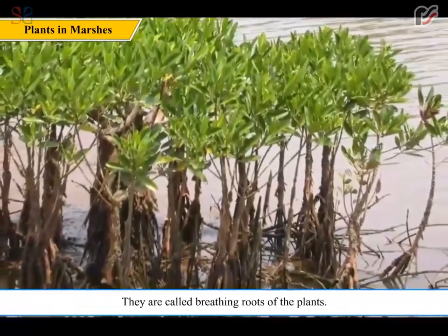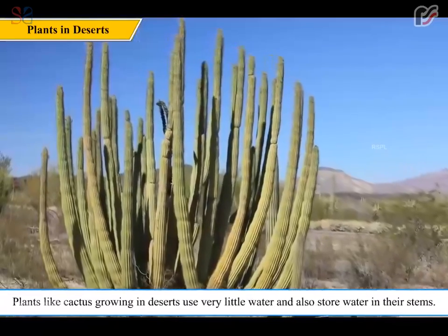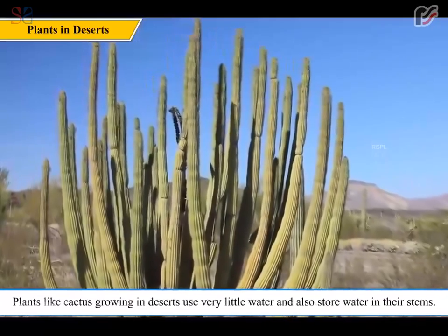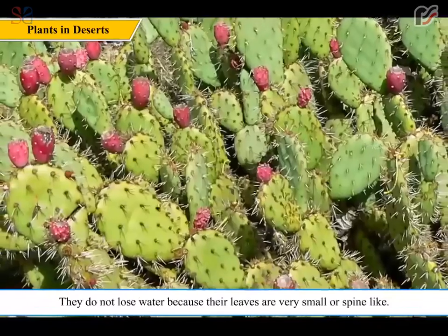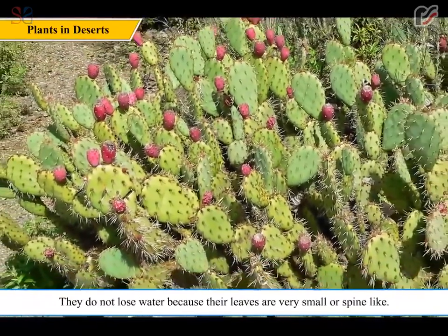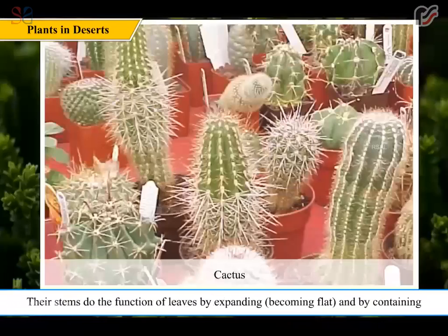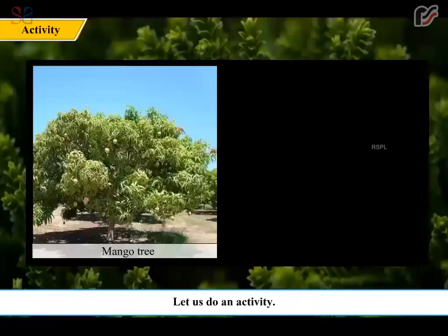The roots that come out of the soil are called breathing roots of the plants. Plants like cactus growing in deserts use very little water and also store water in their stems. They do not lose water because their leaves are very small or spine-like. Their stems do the function of leaves by expanding, becoming flat, and containing green-colored chlorophyll to perform photosynthesis.